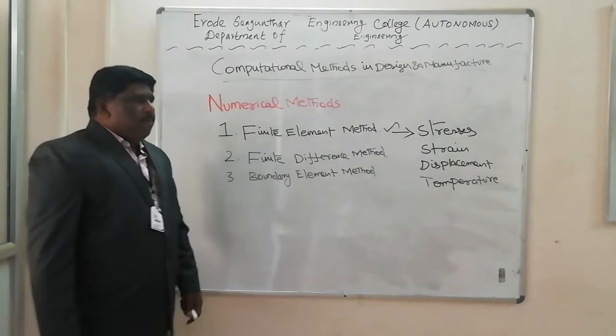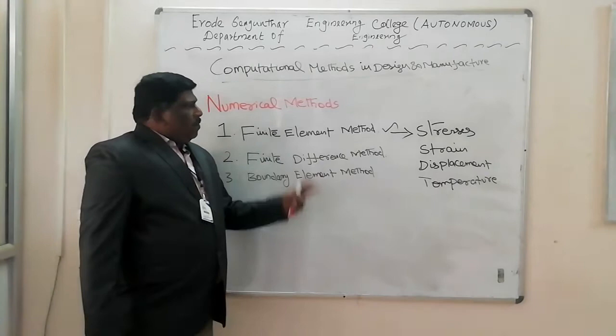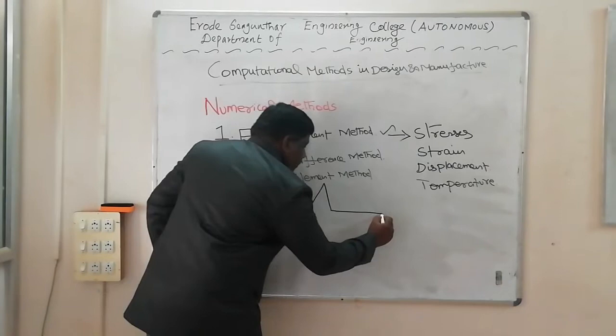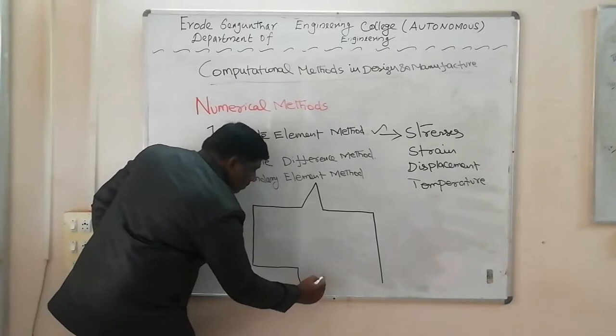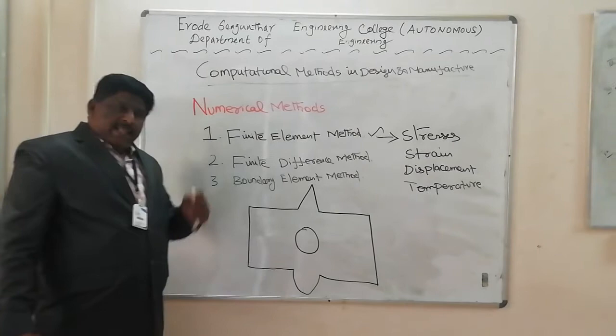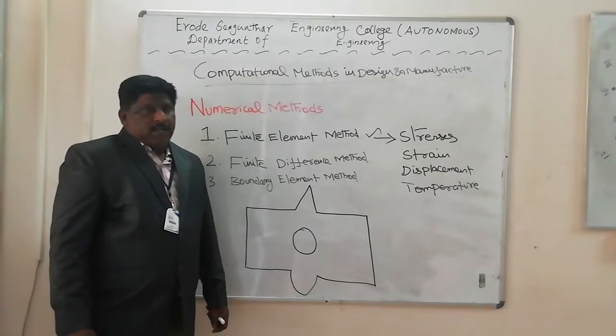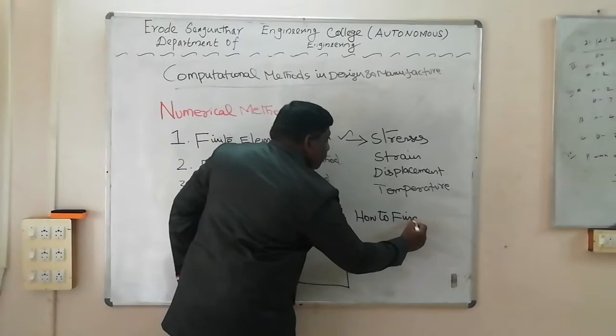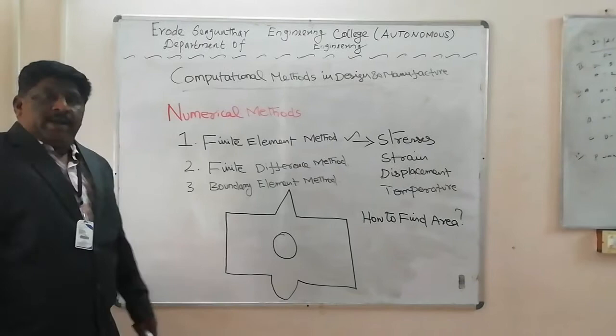In finite element method, let me take an example problem. Consider a sheet that is not a normal shape — it is a very complicated shape. For example, how would you find the area of this sheet?